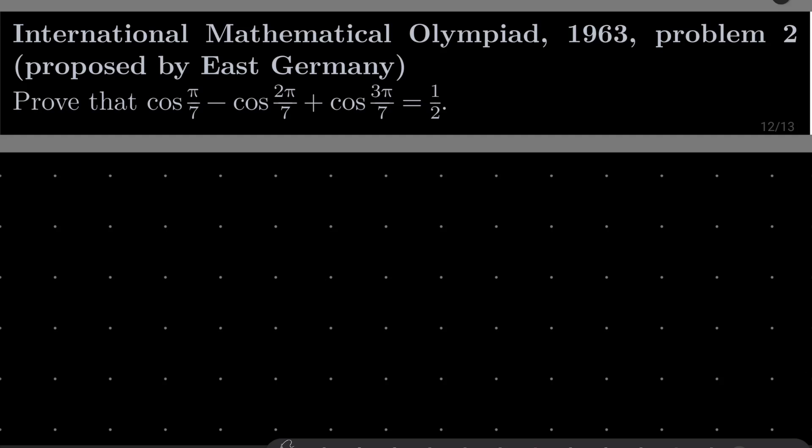We wish to prove that cosine of pi over 7 minus cosine of 2 pi over 7 plus cosine of 3 pi over 7 equals 1 half. So it's a very standard problem. Here are my hints.